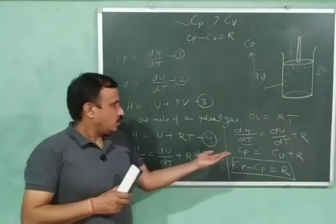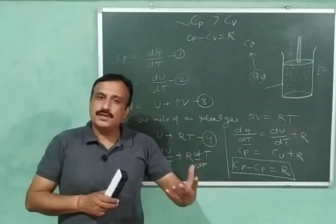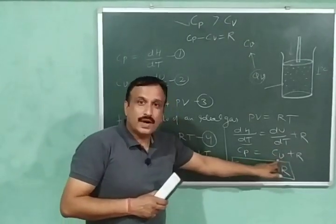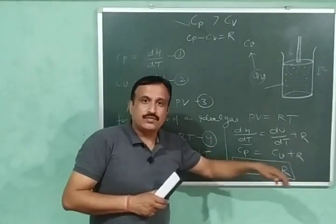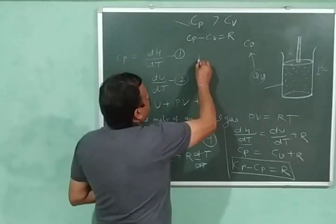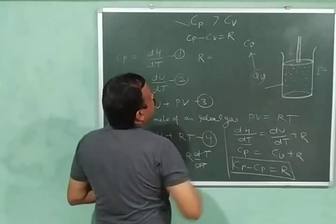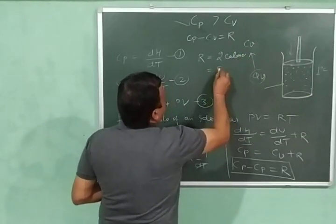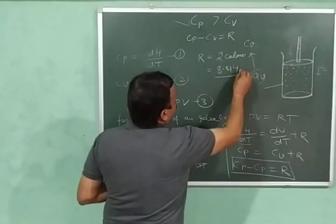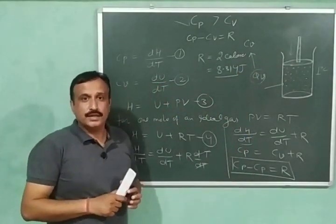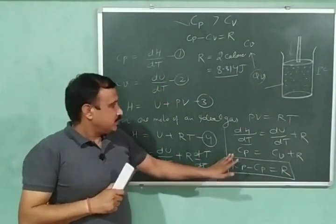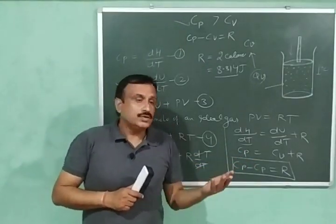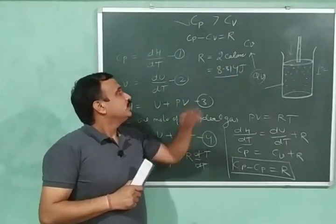This expression also confirms that CP is greater than CV — CP is greater than CV by R. The value of R, the gas constant, is equal to 2 calories or 8.314 joules. So this expression tells us that CP is greater than CV by an amount equal to 2 calories or 8.314 joules.